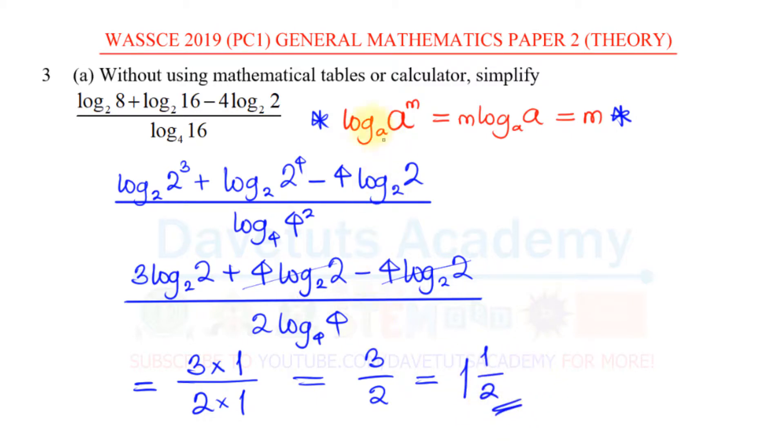As requested, we simplified this particular expression that we were given in logarithm and the final answer is 1.5, that's 3 over 2.